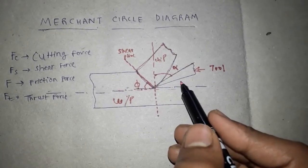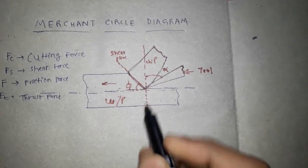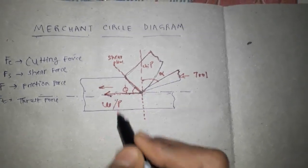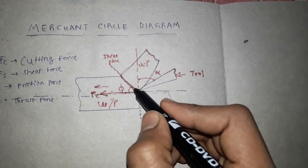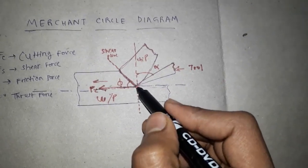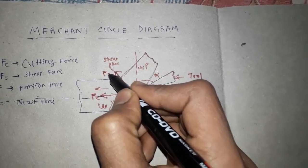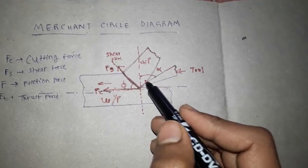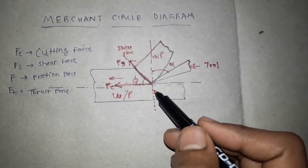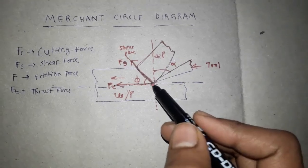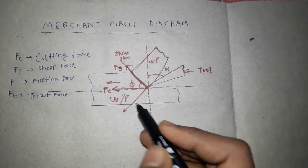The cutting operation is performed in this direction — we are providing the feed in this direction, so the cutting force FC will also act in this direction. When the chip is sheared from the machine surface, the shearing force acts on the shearing plane. The chip also applies force on the workpiece, and due to this the normal force Fn comes into play, acting perpendicular to the shear force.